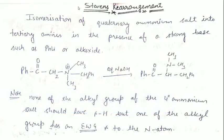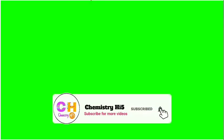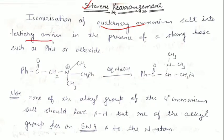First of all, what is Stevens rearrangement? Stevens rearrangement is a type of rearrangement in which a quaternary ammonium salt converts to a tertiary amine in the presence of a strong base. The strong base may be phenyl lithium or alkoxide.